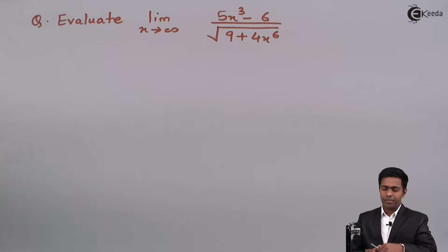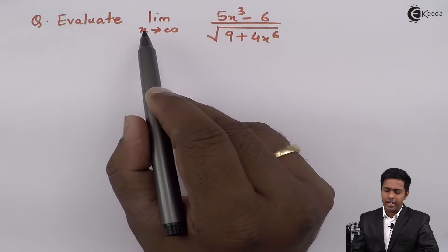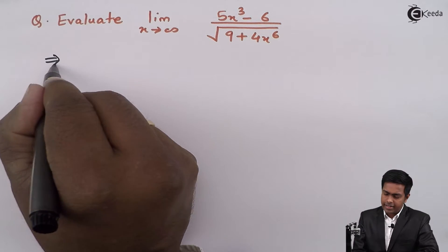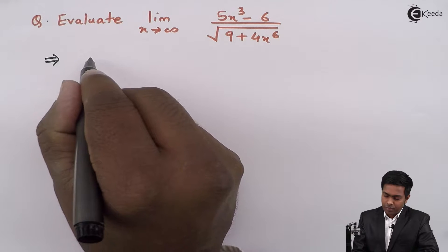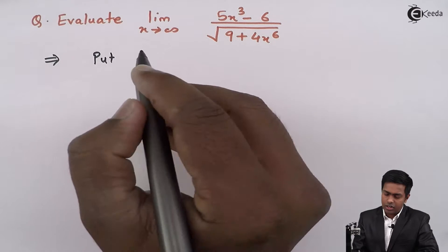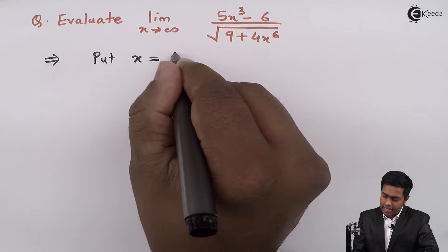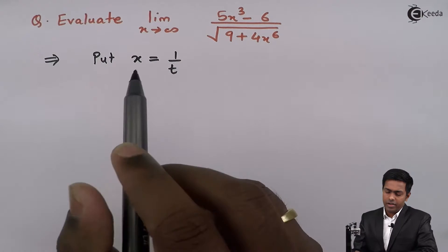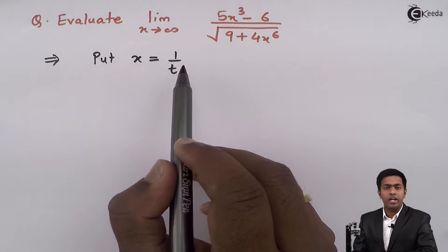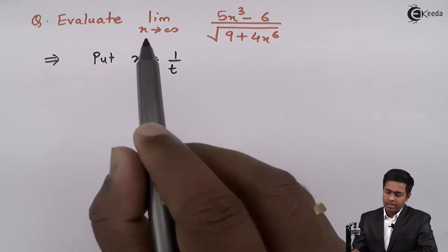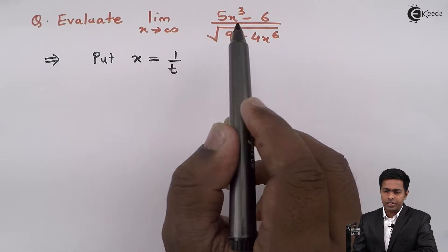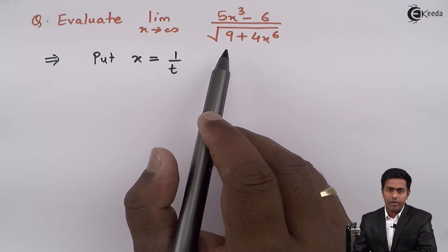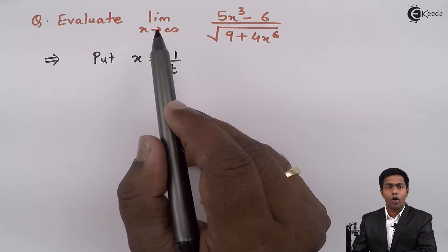Since we have limit x tends to infinity, we will put x as 1 upon t. So we will start our solution by substituting x as 1 upon t. When we substitute x as 1 upon t, this problem will shift from the x domain to the t domain, and hence we have to find the corresponding limit for t.